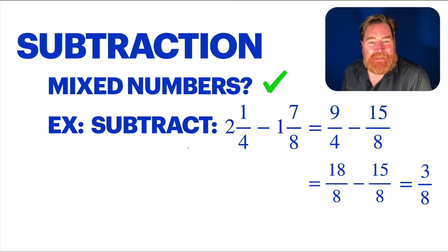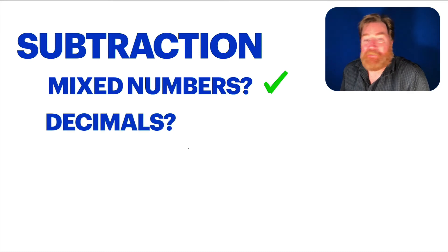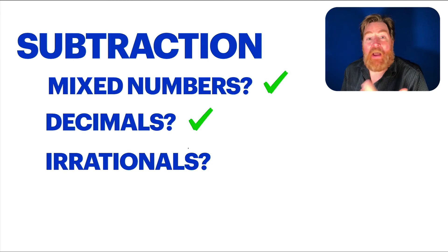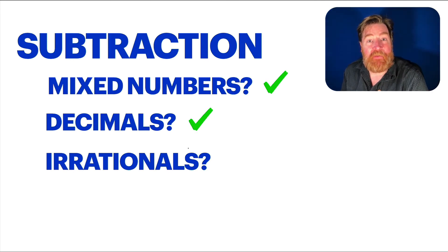How about the other things? Decimals — you're all set, just line them up just like before. And irrationals with the roots — just make sure you've got the same roots and then you subtract them. Nothing to it.